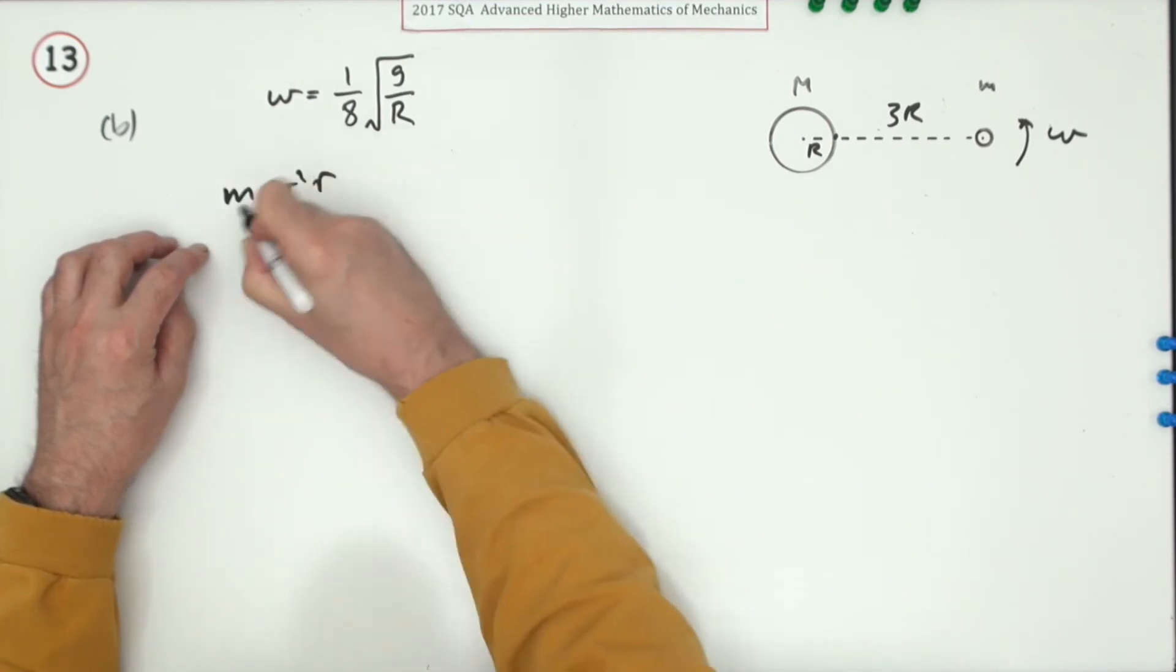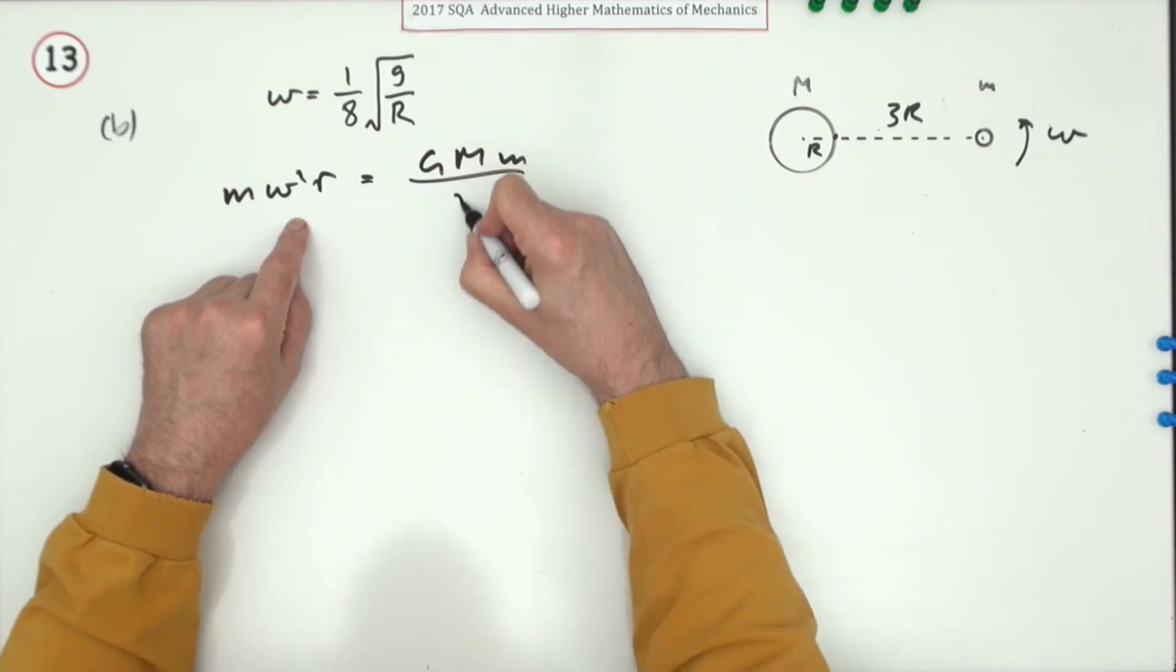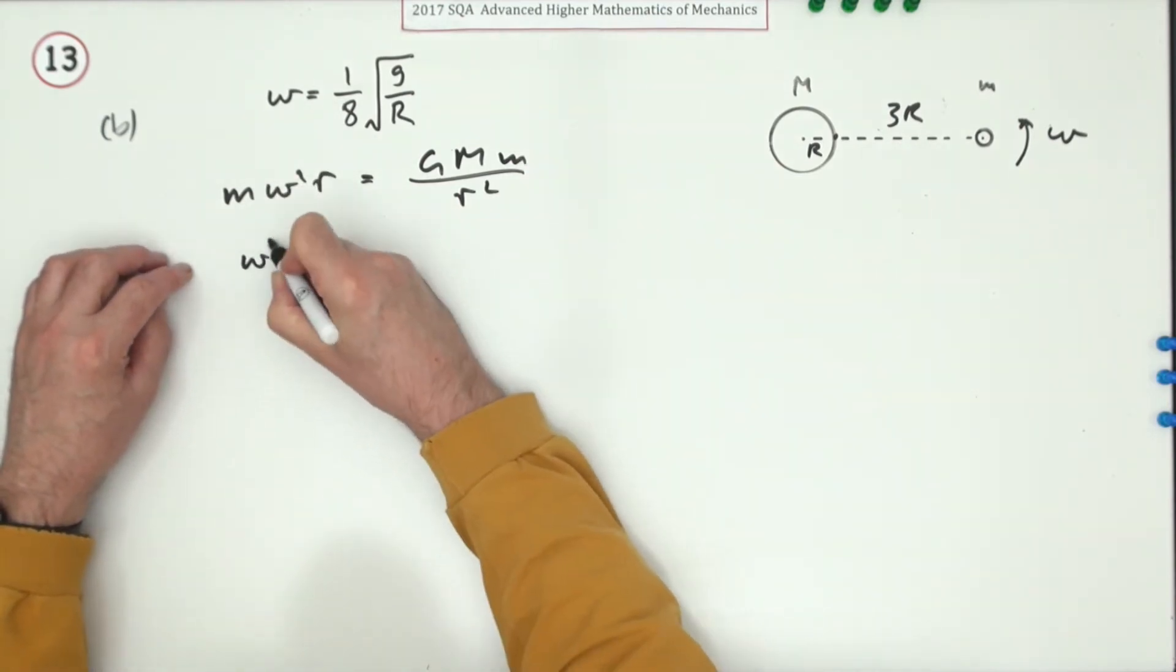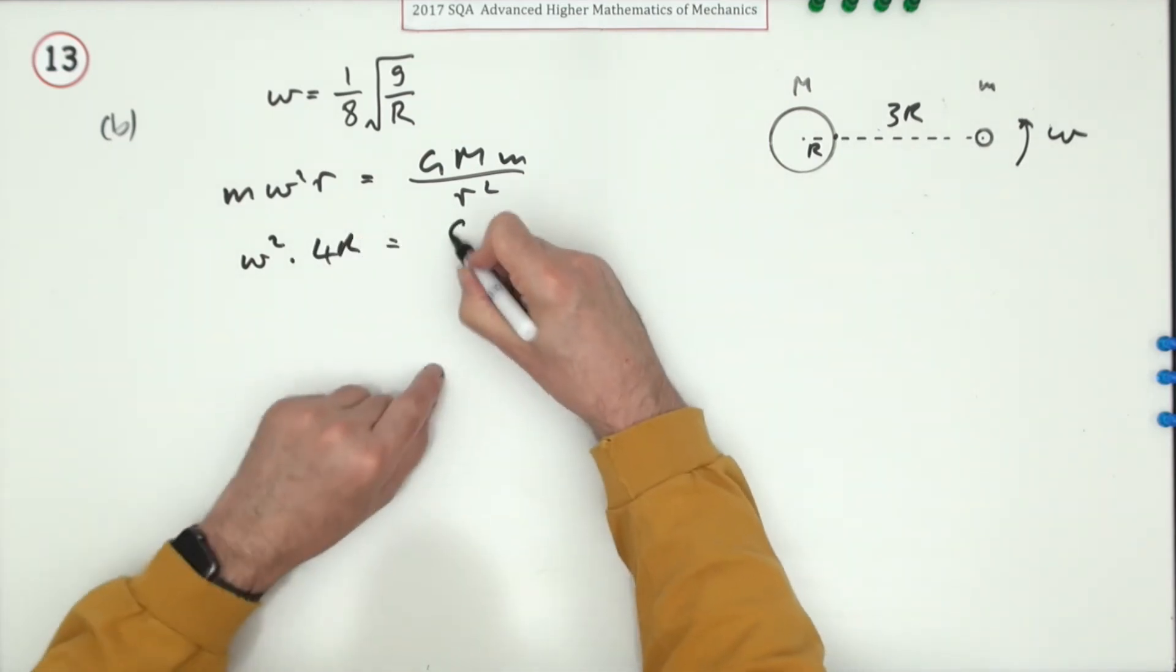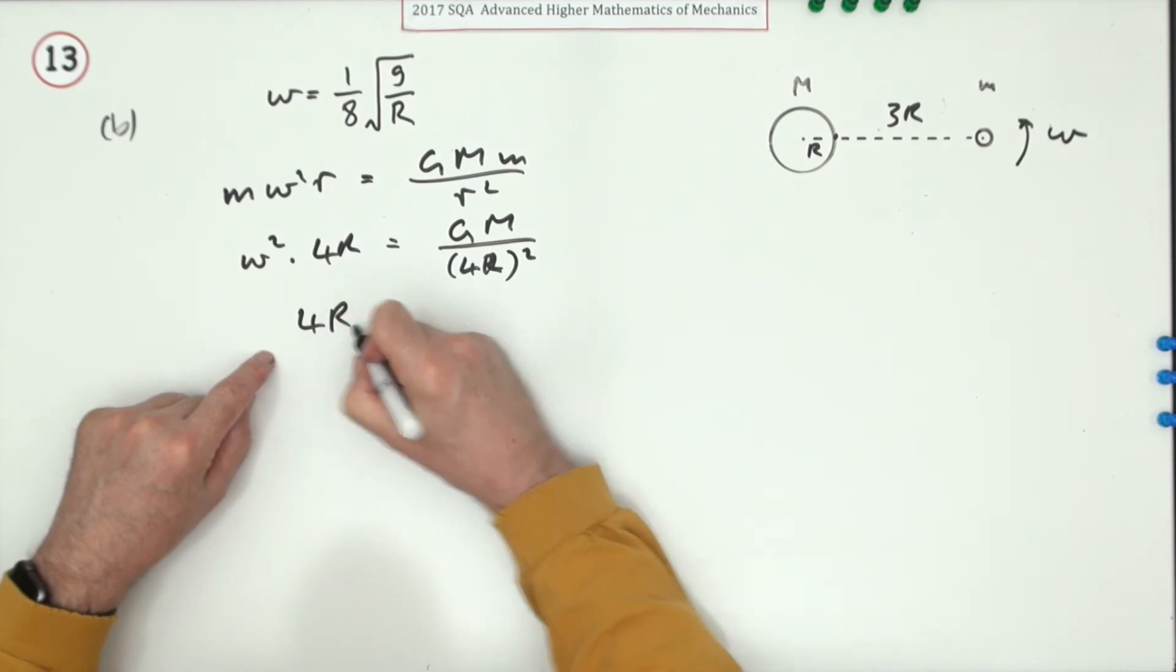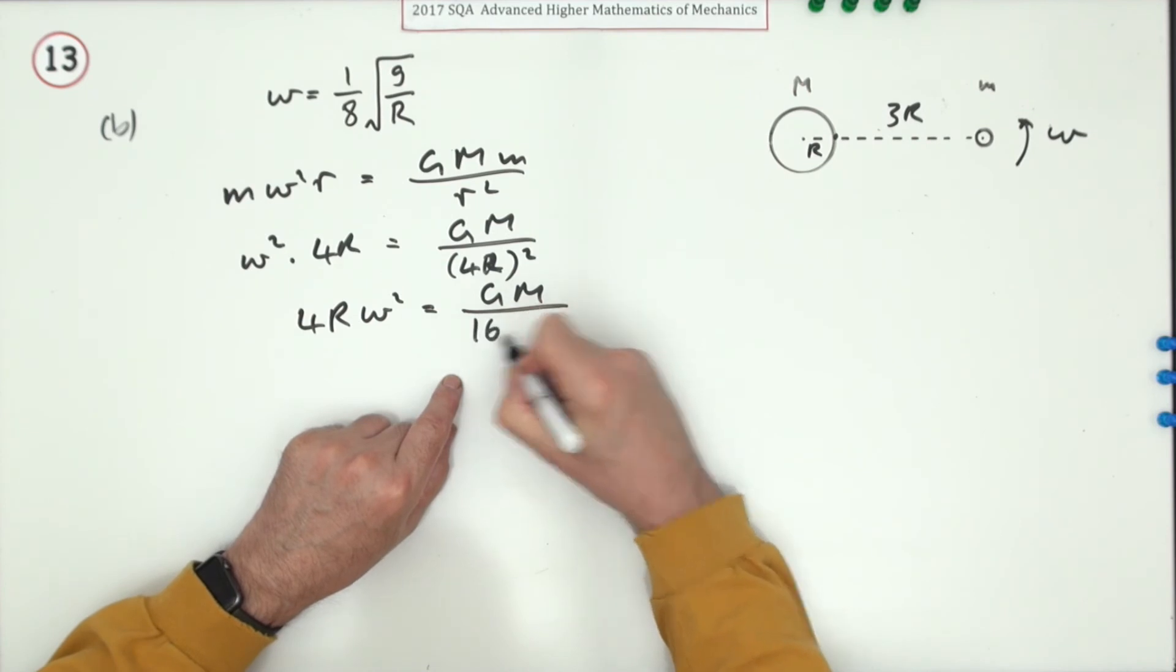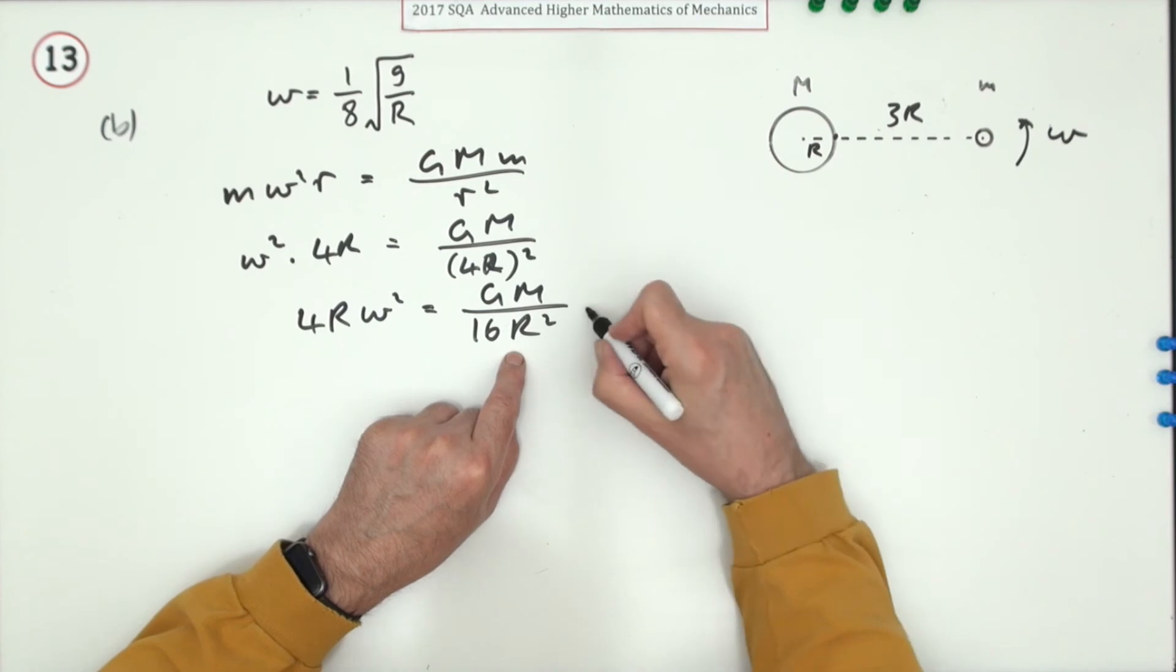Well, the centripetal force m omega squared r, or ma, will be equal to the gravitational force of attraction GMm over r squared. So put in the actual figures. Noticing the m's will cancel out, so omega squared, now the distance between them is going to be 4r, will be GM over 4r squared. I'll just rewrite that: 4r omega squared equals GM over 16r squared. Now I could have taken them across, but I want to keep this little r isolated just now. So there's one equation equating the centripetal force with the gravitational force of attraction.